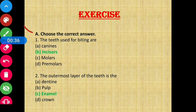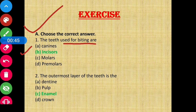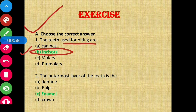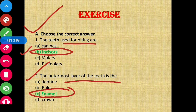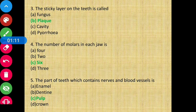Section A: Choose the correct answer. Question number one: the teeth used for biting. There are four kinds of teeth, and among them the one that helps us bite our food — the answer is option B, incisors. Next, the outermost layer of the teeth is known as enamel.